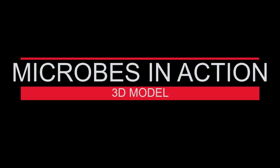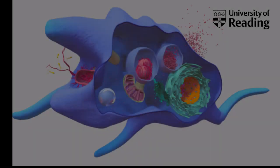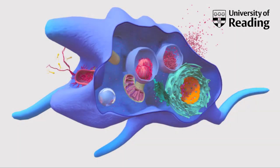Let's take a tour of our 3D model, Microbes in Action, to explore the main differences between a eukaryotic cell, a prokaryotic cell, and a virus. In this model, the large cell is an amoeba that is in the process of eating a bacterial cell, which is also being infected by a bacteriophage.